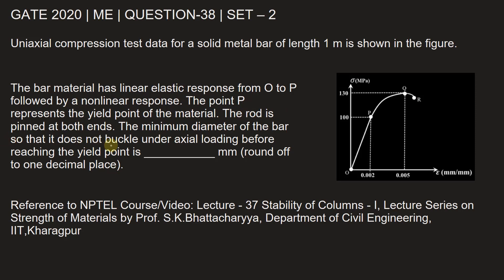The rod is pinned at both ends. The minimum diameter of the bar so that it does not buckle under axial loading before reaching the yield point is dash mm.